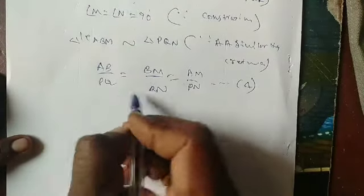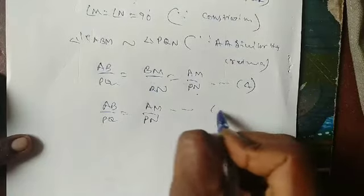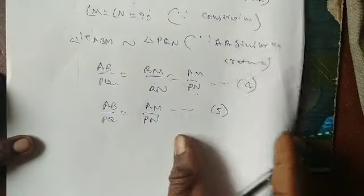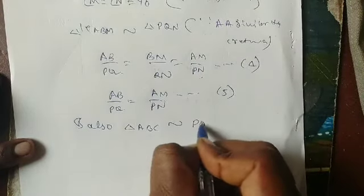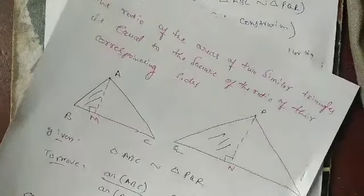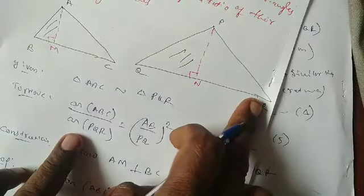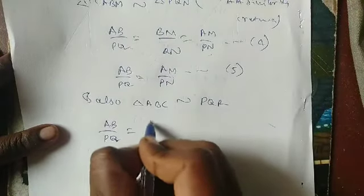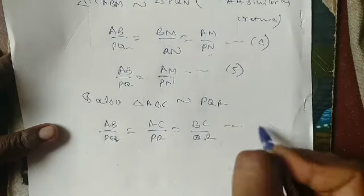From equation 4, AB/PQ = AM/PN. This is equation number 5. Also, since triangle ABC is similar to triangle PQR, we have AB/PQ = BC/QR = AC/PR. This is equation number 6.